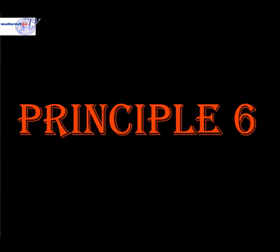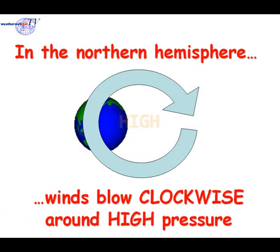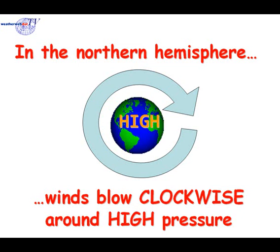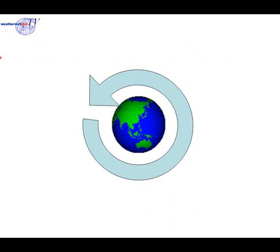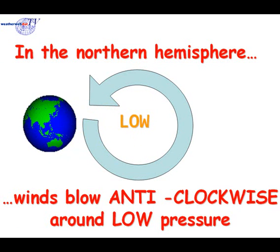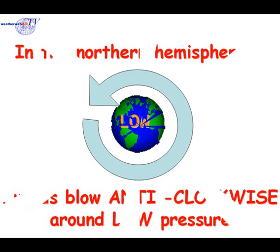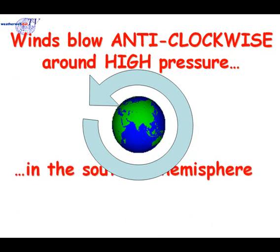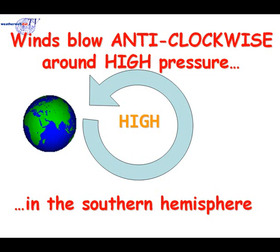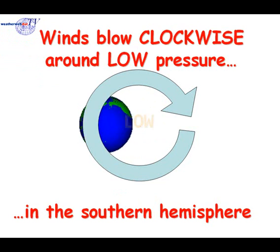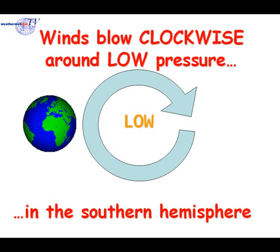And finally, principle 6. This relates to the way that the winds flow. In the northern hemisphere, the winds blow in a clockwise direction around areas of high pressure. In the southern hemisphere it's the other way around — the winds blow in an anti-clockwise direction around high pressure. Around low pressure, they'll blow in a clockwise direction in the southern hemisphere.